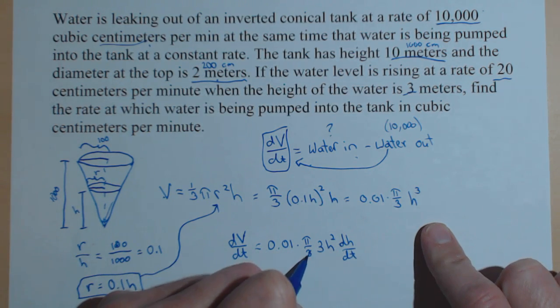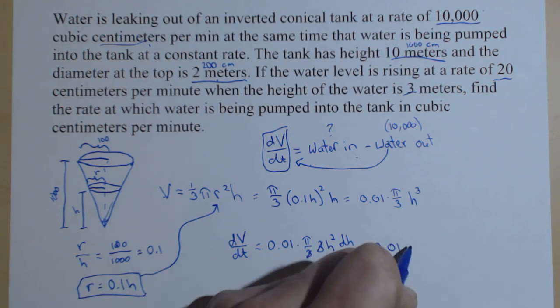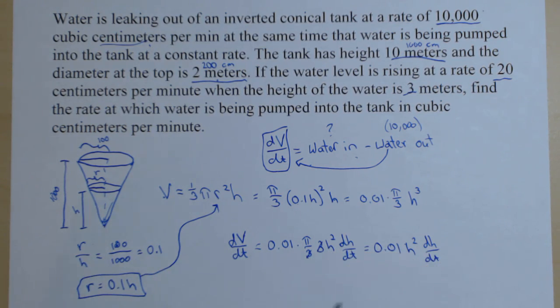If we want to clean this up a little bit, we can certainly cancel those 3s. And we get 0.01 π h² dh/dt.